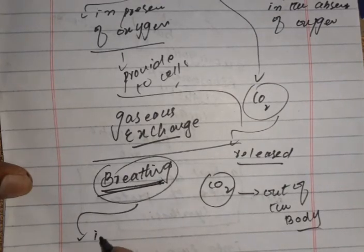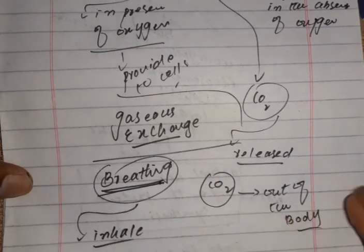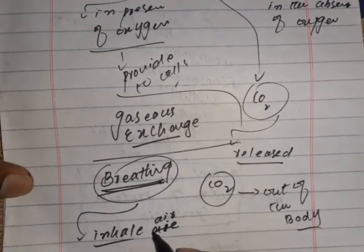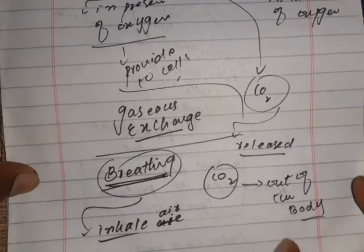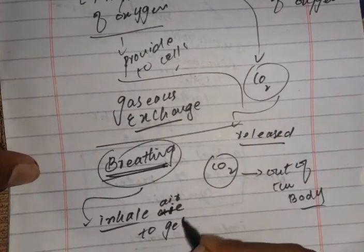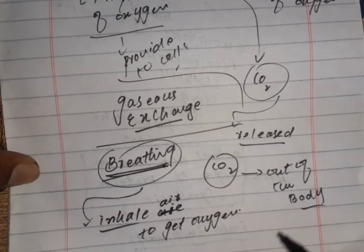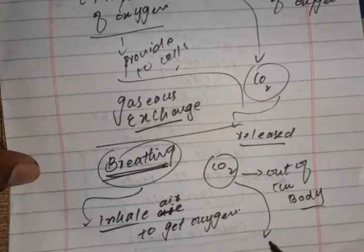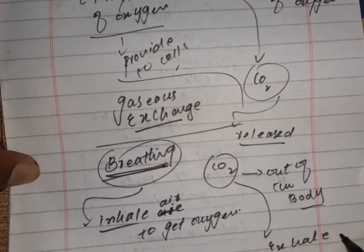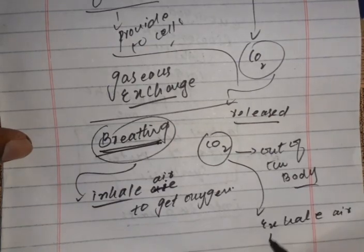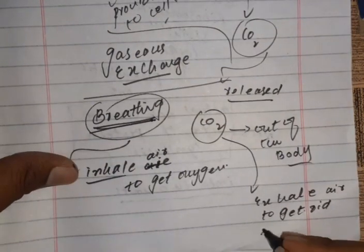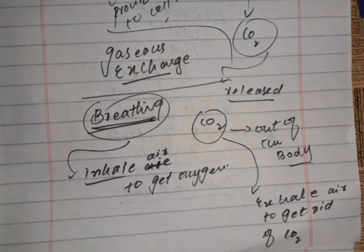We inhale air to get oxygen. We exhale air to get rid of carbon dioxide. This is all about the breathing process and the respiration process.